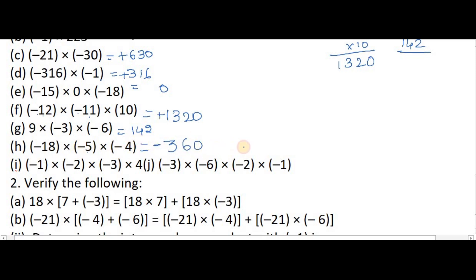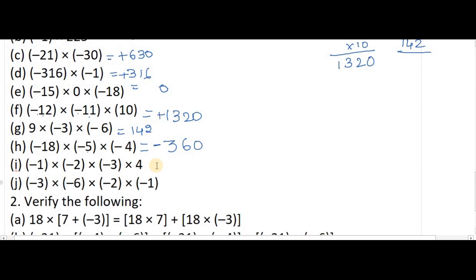Next: 18 fives are 90, 90 fours are 360. Minus into minus is plus; plus into minus is minus. For the following problems: 1 twos are 2, 2 threes are 6, 6 fours are 24. Minus into minus is plus; plus into minus is minus. Then 3 sixes are 18, 18 twos are 36, 36 ones are 36. Minus into minus is plus; plus into minus is minus; minus into minus is plus.